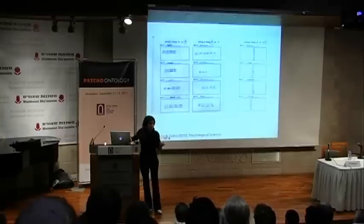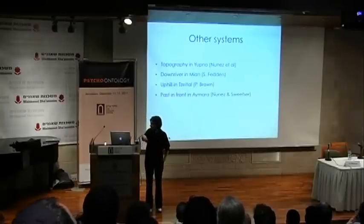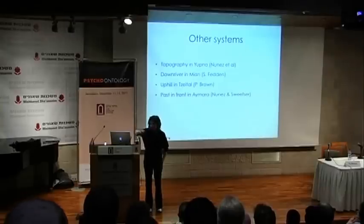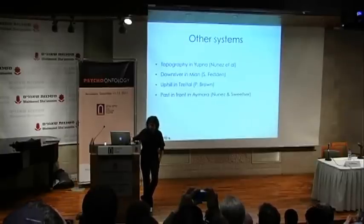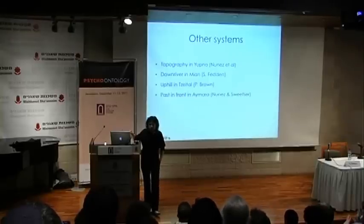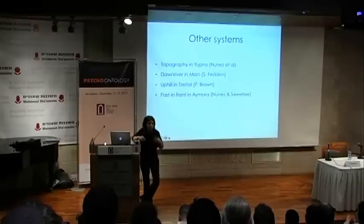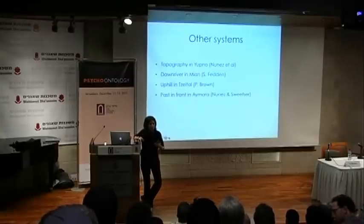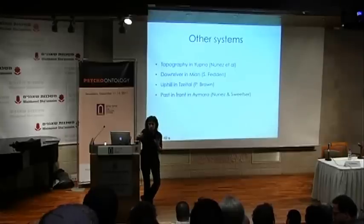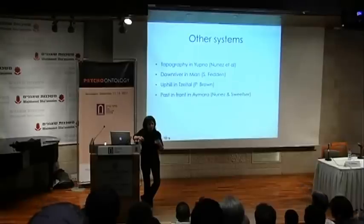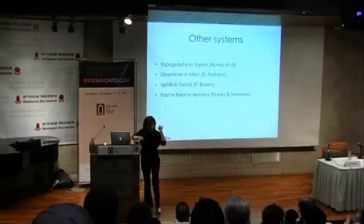East to west is not the only possible direction — since we found this pattern, others have gone out and looked for other absolute patterns. Other systems include a topographic system where time goes first downhill and then across a valley in Papua New Guinea, and downriver in another culture there. Penny Brown finds that time goes uphill for the Tzeltal, a Mayan group. There are also other ways of organizing time that are not absolute. It's natural in English to think the past is behind us and the future in front, but the Aymara, an Andean group, put the past in front of them and gesture forward when talking about the past.